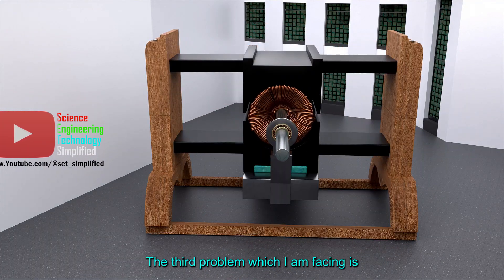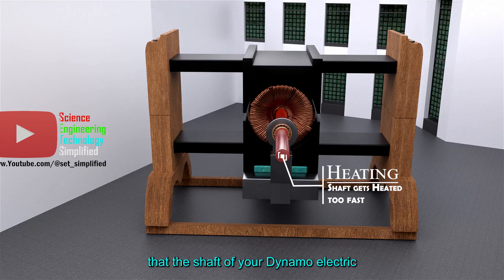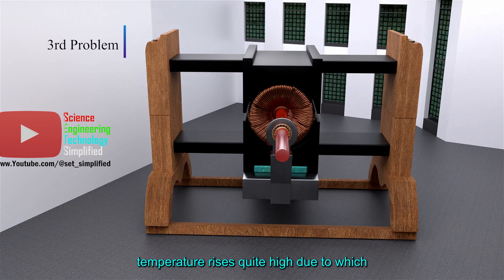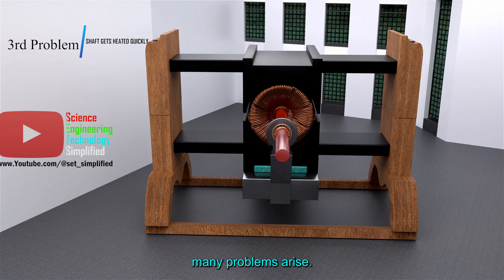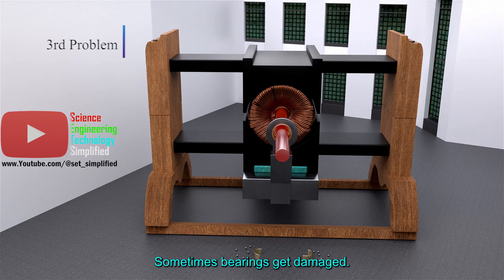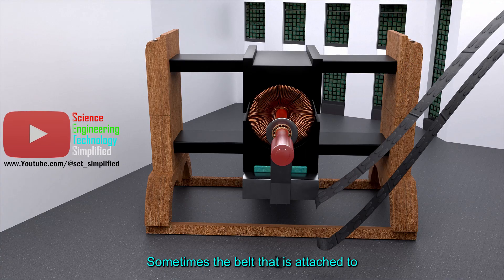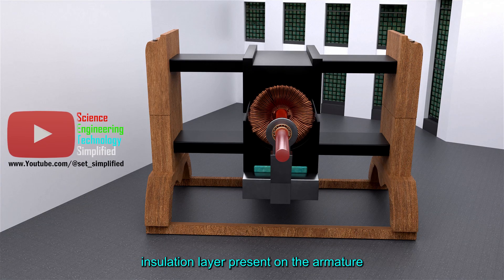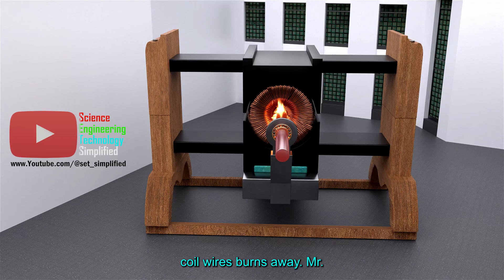The third problem which I am facing is that the shaft of your dynamo electric machine gets heated up quickly and its temperature rises quite high, due to which many problems arise. Sometimes bearings get damaged, sometimes the belt that is attached to the shaft gets damaged, and sometimes the insulation layer present on the armature coil wires burns away.